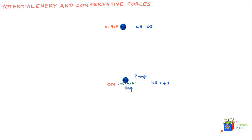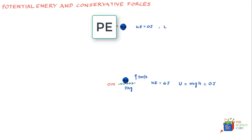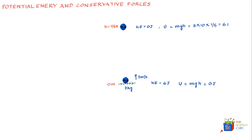Physics tells us that this kinetic energy keeps reducing but gets converted into something called potential energy, given by the symbol U. This is defined as the product of mass, gravity, and the height h — the distance between the mass and the earth. At ground level, potential energy is zero joules because h is zero. As the ball goes up, potential energy increases to mgh, which equals 3 × 10 × 1/5 = 6 joules.